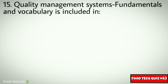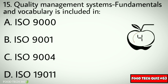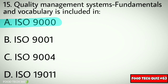Question No. 15. Quality Management Systems — Fundamentals and Vocabulary is included in: Options: A. ISO 9000, B. ISO 9000, C. ISO 9000, D. ISO 9000. Correct answer: A. ISO 9000.